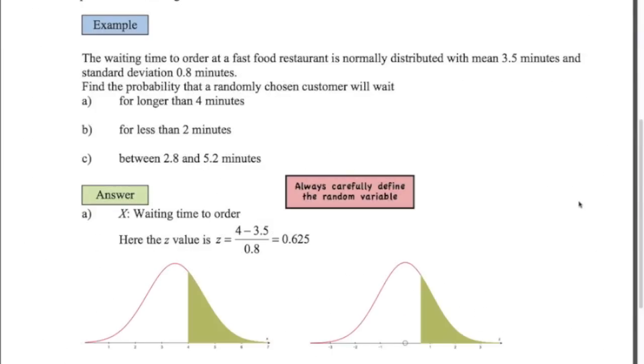Here we've got a question about the waiting time to order fast food in a restaurant. We've done lots of surveys and we know that it's normally distributed, mean 3.5 minutes, standard deviation 0.8 minutes. We're going to work out these probabilities. So x here is our waiting time to order.